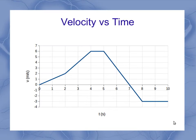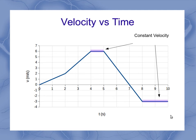Now we can take a look at a few other things on our velocity versus time graph. These horizontal flat segments are where we've got constant velocity. Constant velocity also means no acceleration, so both of those segments have no acceleration on them.